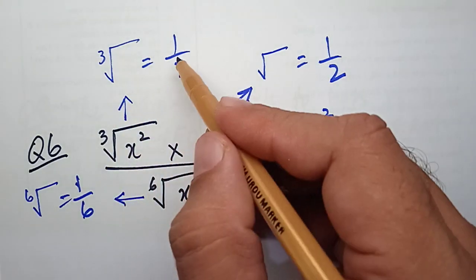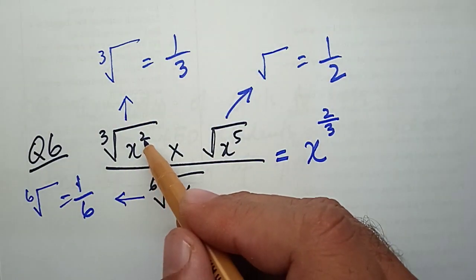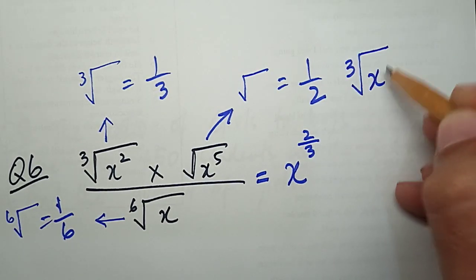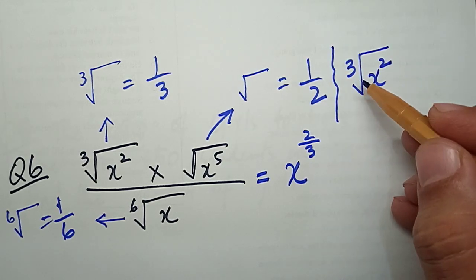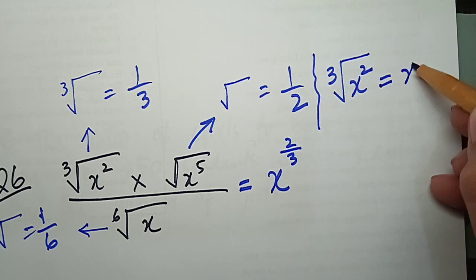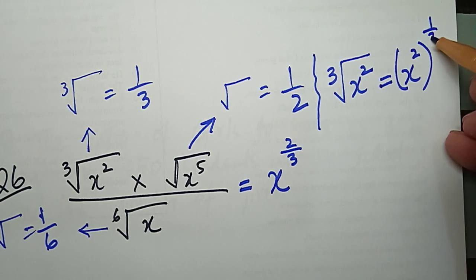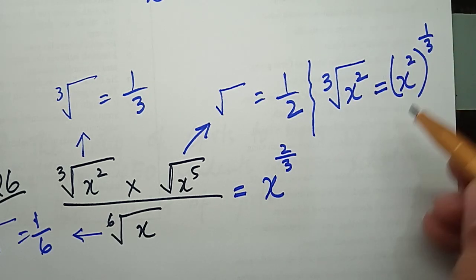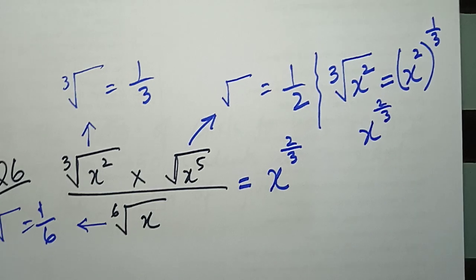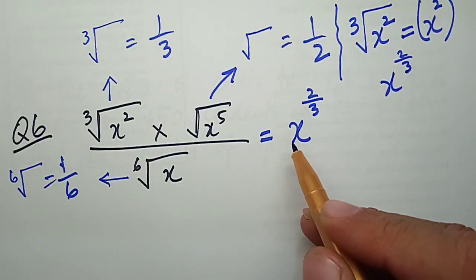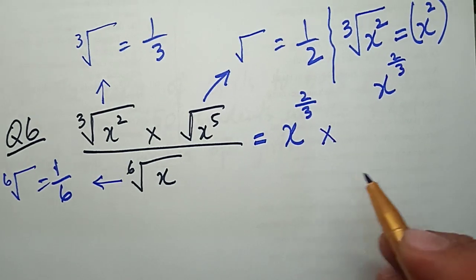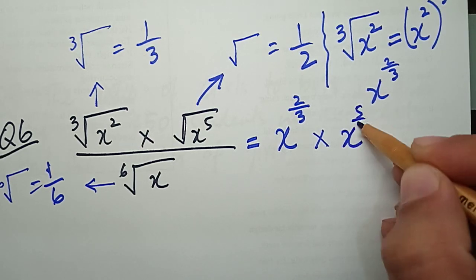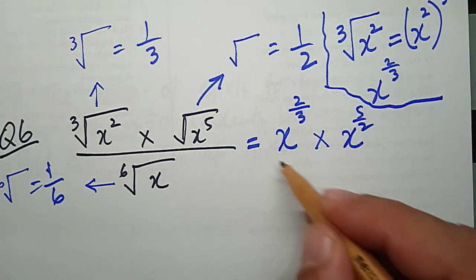Because 1 upon 3 will multiply with 2 — let me explain: we have the cube root of X squared, so in index form I write X squared with a whole power of 1 upon 3, and when I multiply 2 by 1 upon 3 this equals 2 upon 3. That's why we have X power 2 upon 3, multiplied by X power 5 upon 2.